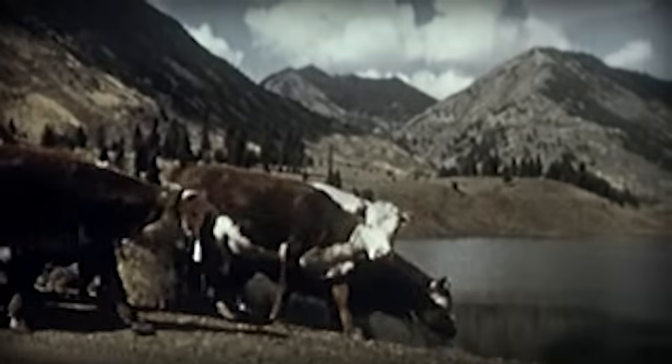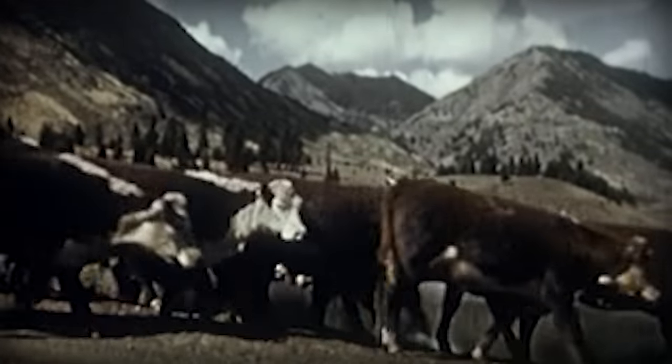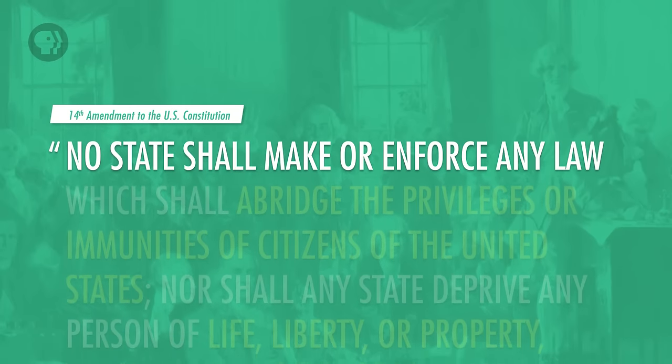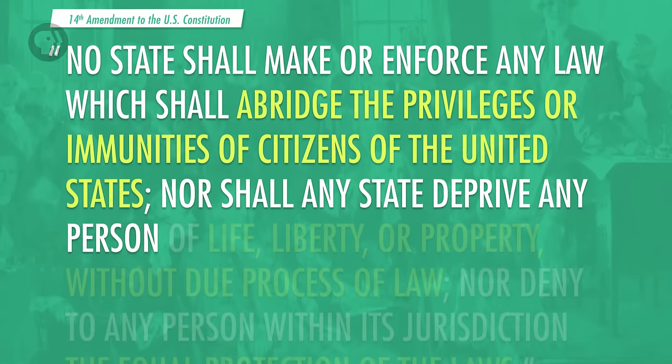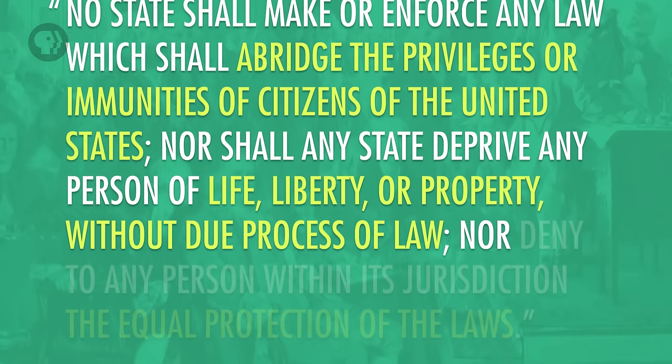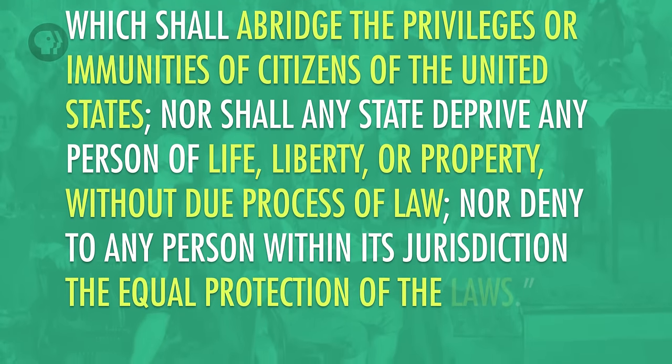Before we move forward, let's look at the Fourteenth Amendment. The civil liberties enshrined in the Bill of Rights initially applied only to the federal government — state governments could violate them until the cows came home, which in 1789 is how they measured time. This changed with the Fourteenth Amendment, which allowed the court to incorporate the rights against the states over time. This is especially important with criminal procedural rights, because most of the time criminal cases are brought by state governments. The relevant part reads: 'No state shall make or enforce any law which shall abridge the privileges or immunities of citizens of the United States, nor shall any state deprive any person of life, liberty, or property without due process of law, nor deny to any person within its jurisdiction the equal protection of the laws.'